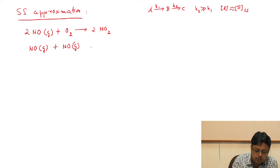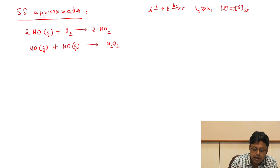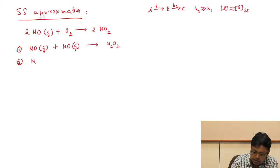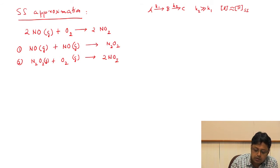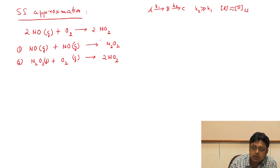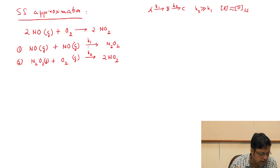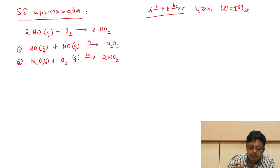We consider the steps differently. In step 1, two nitric oxide molecules react to form N₂O₂ — a different intermediate species. In step 2, N₂O₂ reacts with oxygen to form two molecules of nitrogen dioxide. Stoichiometrically, adding steps 1 and 2 gives the same overall reaction. But here we are not considering an equilibrium in the first step — we are keeping an analogy with the earlier case.